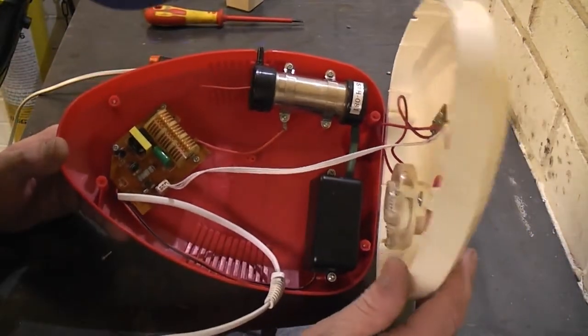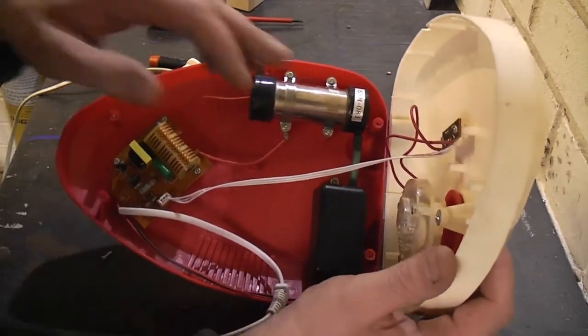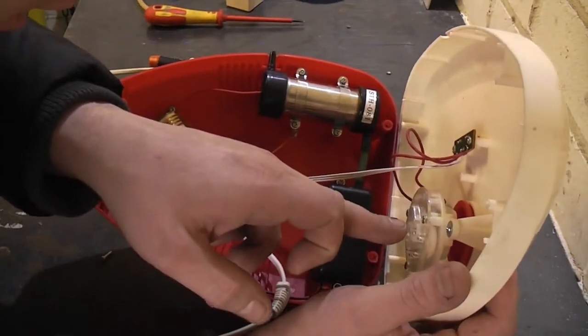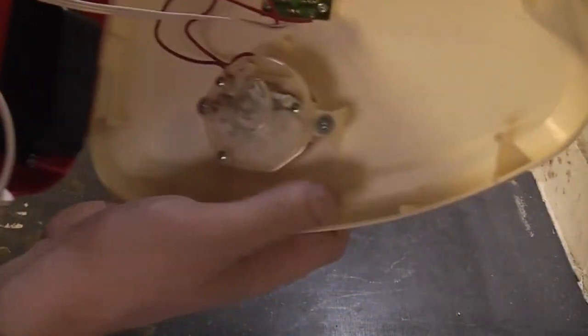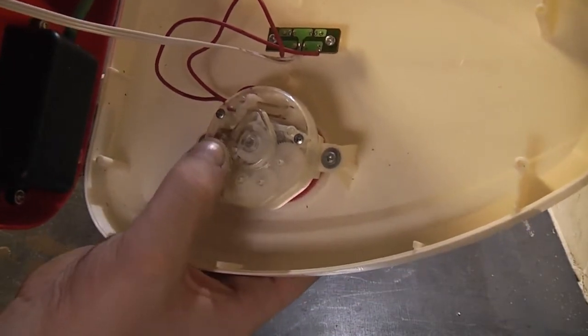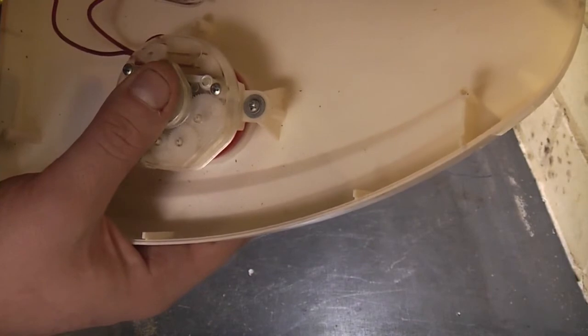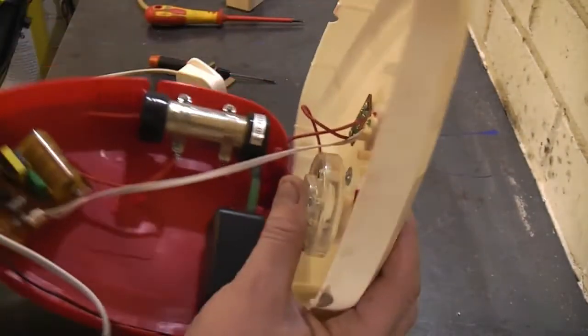So inside we've got a small PCB. Small PCB up there, the timer, which is a mechanical small arrangement. Small PCB there with the red and green indicator lights on for power on and ozone production.